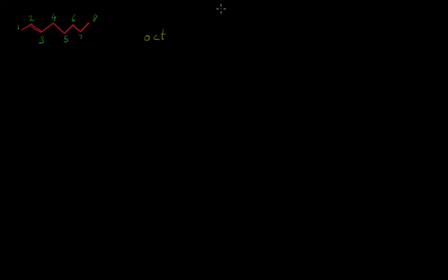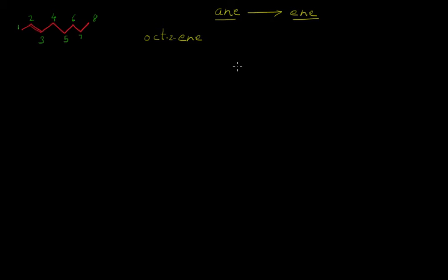In the case of alkenes we generally end with '-ane', but in the case of alkynes this should be replaced by '-yne'. It means that at the end of the IUPAC name of an alkyne we must write '-yne'. The position of the carbon-carbon double bond should reflect in the IUPAC name, so this will come before the suffix '-yne'. So this will become oct-2-yne. The IUPAC name for this compound will become oct-2-yne.